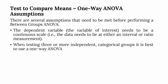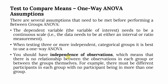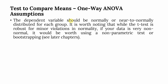When comparing more than two groups, we use One Way ANOVA. You should have independence of observations, meaning no relationship between observations in each group or between the groups themselves — for example, different participants in each group with no participant appearing in more than one group. The dependent variable should be normally or near-normally distributed for each group. If data is very non-normal, it is worth using a non-parametric alternative or bootstrapping.